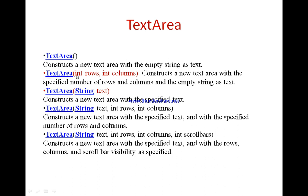The second constructor is TextArea(int rows, int columns). The first parameter, rows, specifies the height of the TextArea in terms of rows. The second parameter, columns, specifies the width in terms of characters visible. The third constructor is TextArea(String text), which creates a TextArea with an initial text specified by the string parameter.